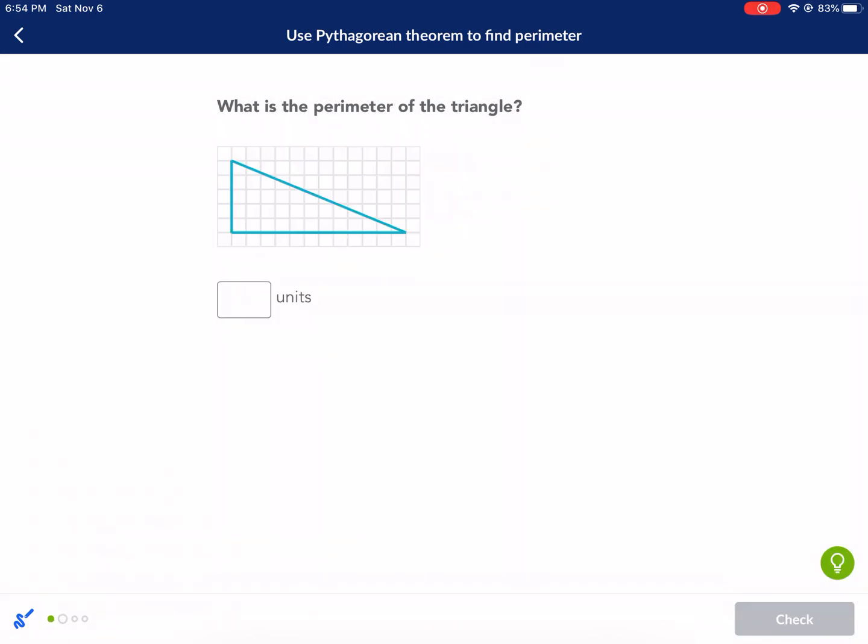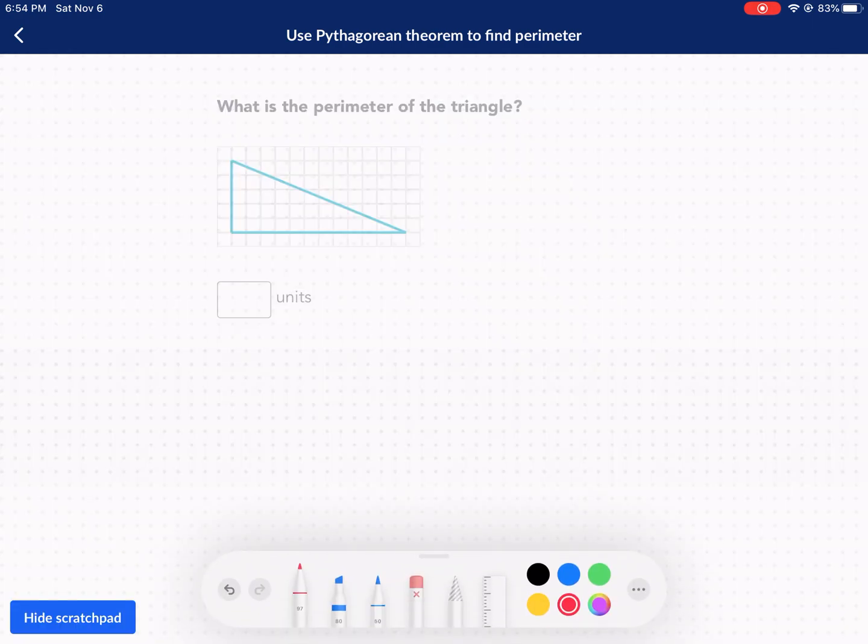Next question. What is the perimeter of the triangle? This one's a little bit easier just because we have two lengths right away that we can find and they made the boxes bigger. So it's easier to see. So it's one, two, three, four, five.